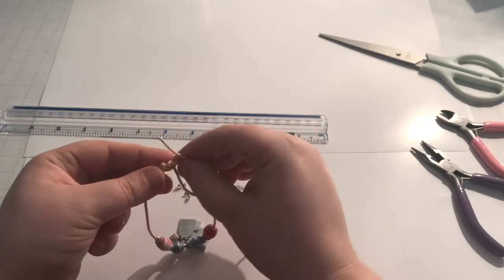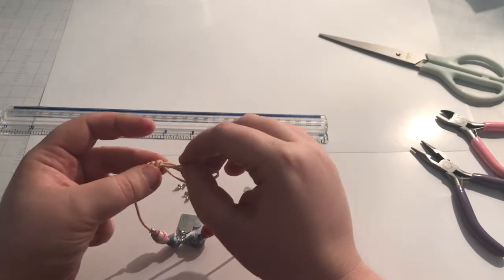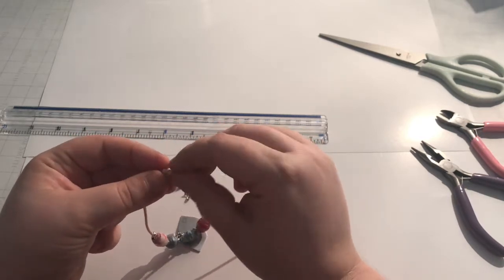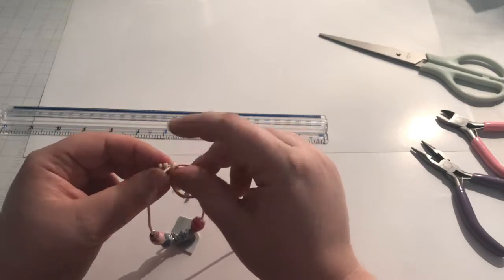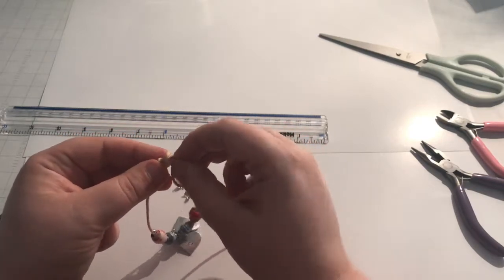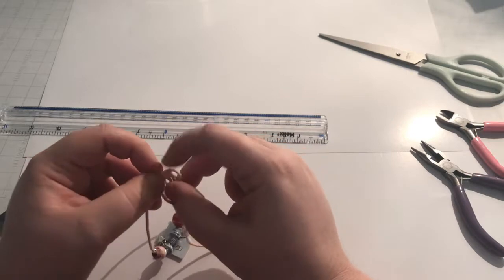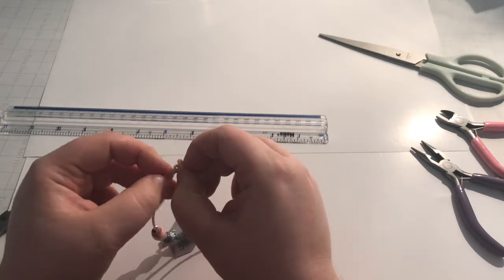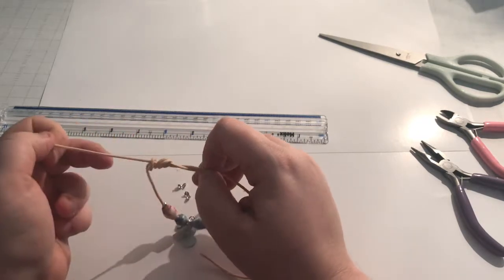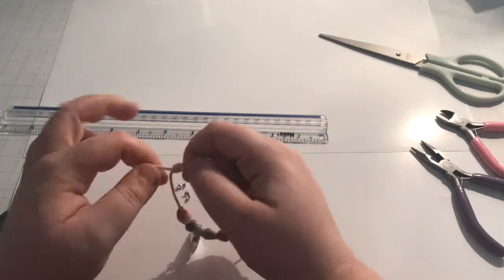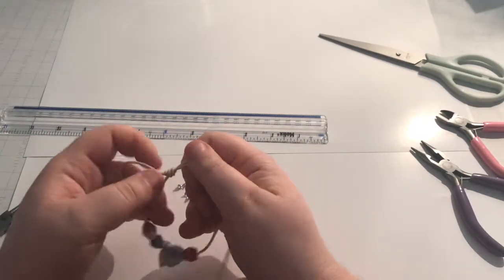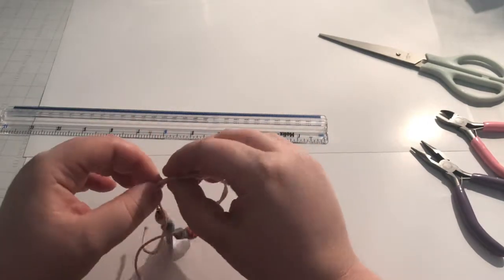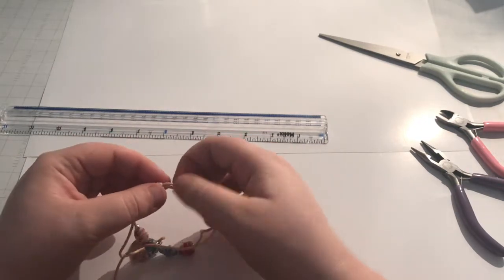And then when you've got the four, let it loosen a bit. Actually I've only done three, it doesn't really matter, three or four. And feed it through, back through the middle of all of these loops. Like that. And pull it. Pull it tight. So that it makes a knot like that. That's very neat. And you can pass the rest of the cord through it. So it is adjustable.